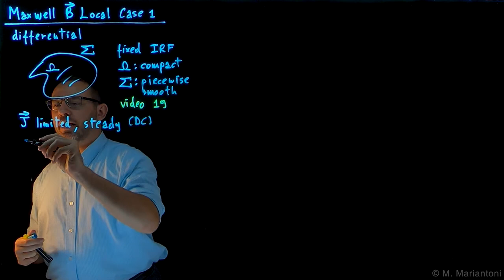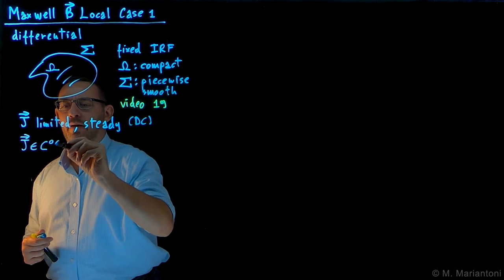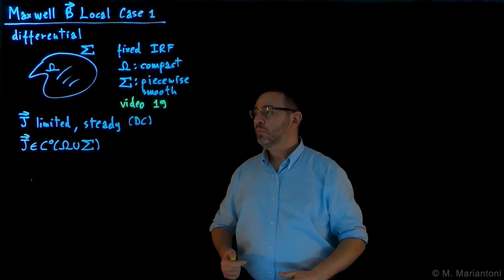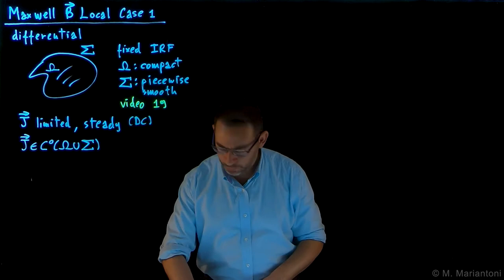Eventually, we are going to expand into the case of non-DC currents in piece 342. In addition, let us further hypothesize that J is a continuous function everywhere in capital Omega all the way to the frontier capital Sigma. Under these conditions, these are sufficient and necessary to show the differential form of Maxwell's equations for the magnetostatic field B.